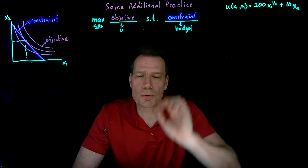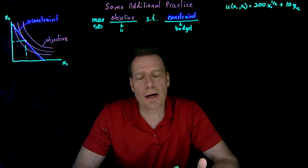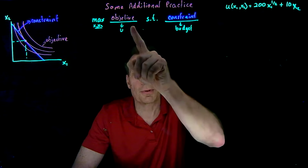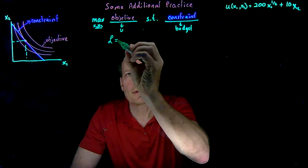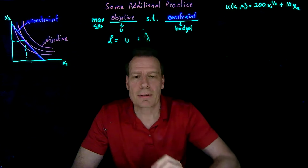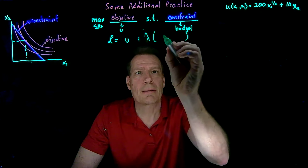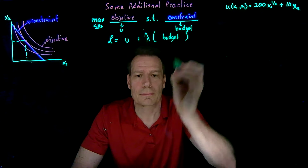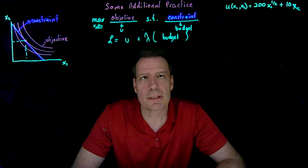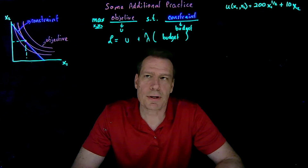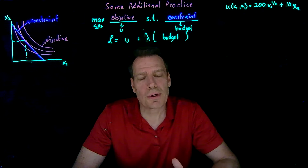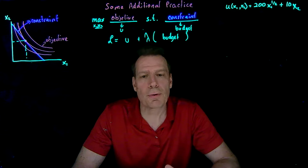Once you've figured out what your objective is and what your constraint is, you can set up the Lagrange function, because you'll set it up in exactly the same way no matter what the problem is. The Lagrange function is just the objective first — in this case, utility — plus lambda times the constraint. When we put the budget in here, we collect all the terms to one side. And 90% of the battle is to figure out how to set up the Lagrange function. If you know how to do that, the rest is just math.